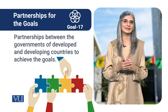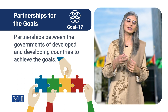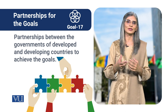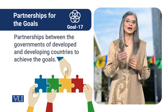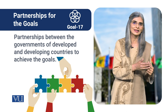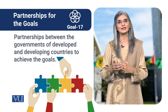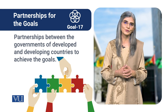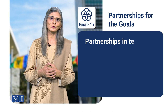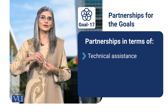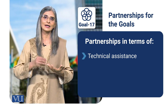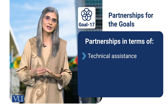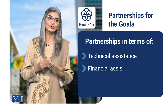Ye joh obligations aur rights hain, inko through international development assistance deliver kiya jata hai. Developed countries developing countries ko financial aur technical imdaad praham karte hain, jis ke zariye developing countries sustainable development goals ko achieve karne ke liye investment aur efforts karti hain. Ye development assistance technical bhi ho sakti hai — trained human personnel ya advice jaise UN ke forum se — lekin is goal ke hawale se joh mukhtalif main maqsad hai, woh financial assistance hai.